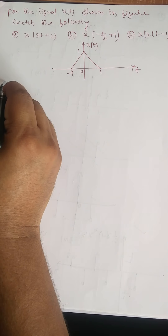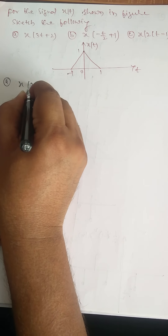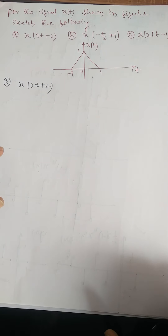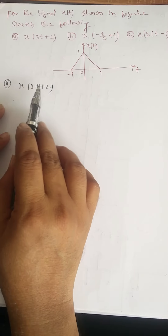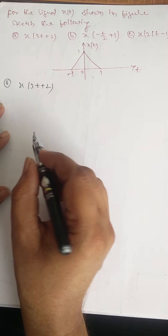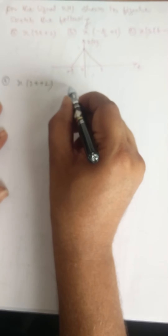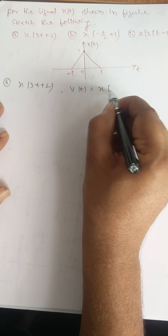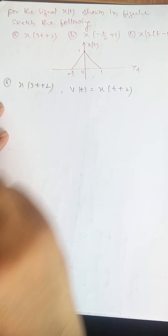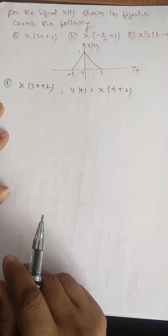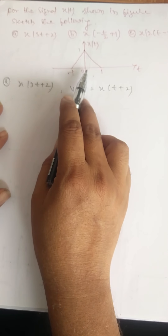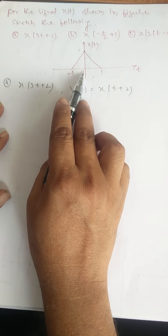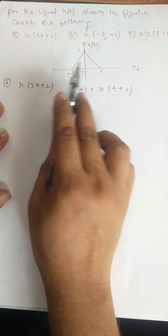Let us take the first problem, that is x of 3t plus 2. That means we will have shifting and scaling operations. First, let us perform the shifting operation. Let us take an intermediate signal v of t equal to x of t plus 2, that is, shift the signal to the left-hand side by 2 units. That means minus 1 comes at minus 3, 0 comes at minus 2, and 1 comes at minus 1.